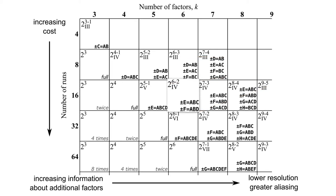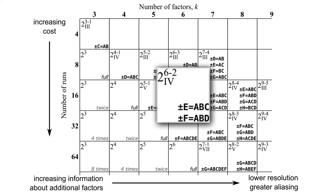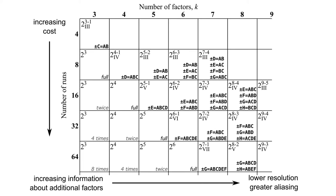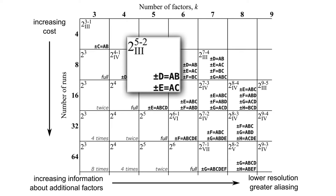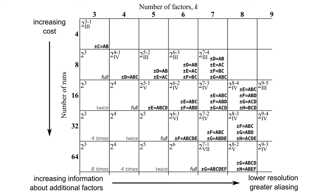In the example with 16 experiments and 6 factors, we had a resolution 4 design. In our prior example with 5 factors and 8 experiments, we had what was called a resolution 3 design, because main effects were confounded with two-factor interactions. The resolution is always equal to the length of the shortest word in the defining relationship.